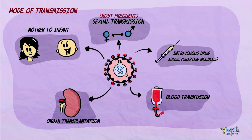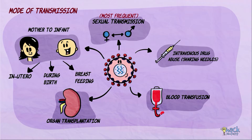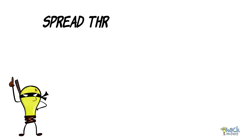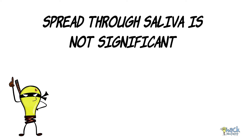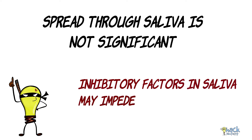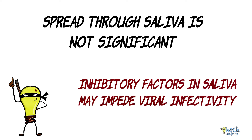Mother-to-infant transmission could happen in utero, during birth, or during breastfeeding. The spread of HIV through saliva is not significant, possibly because there are inhibitory factors in saliva that impede the infectivity of the virus.